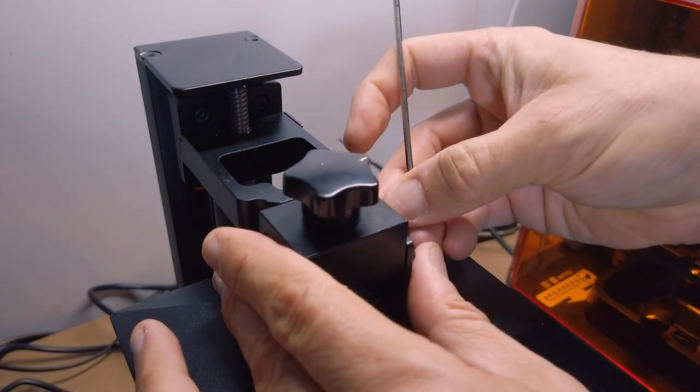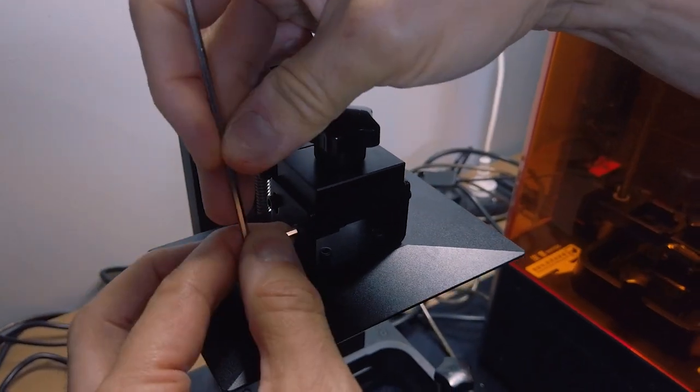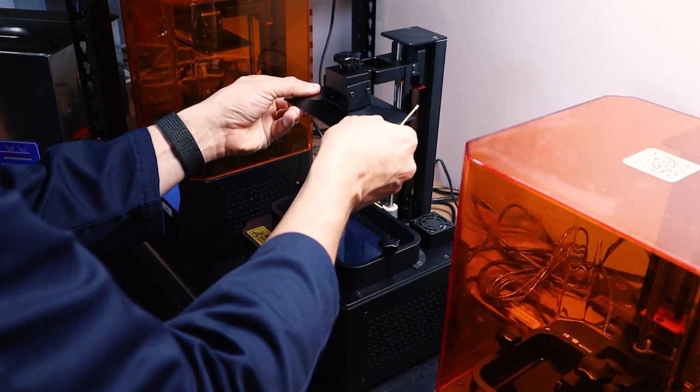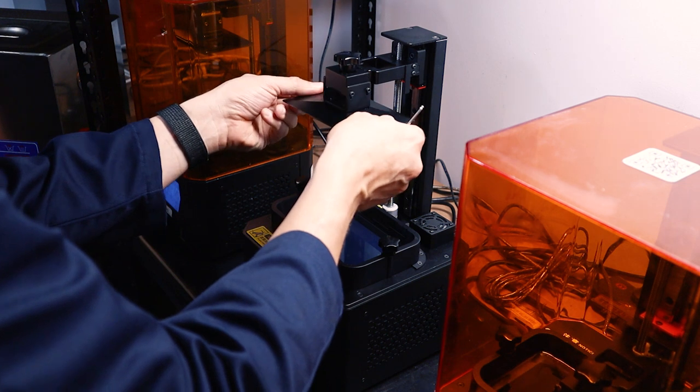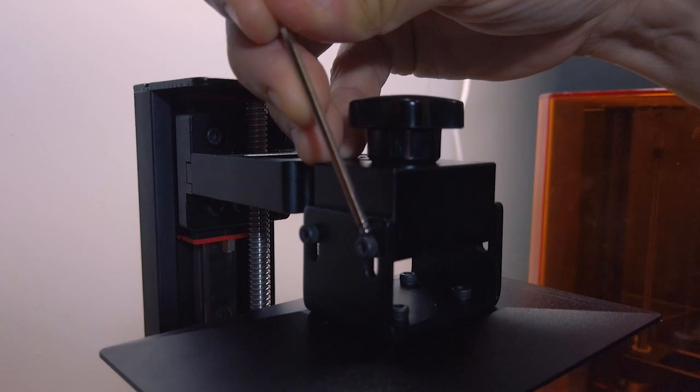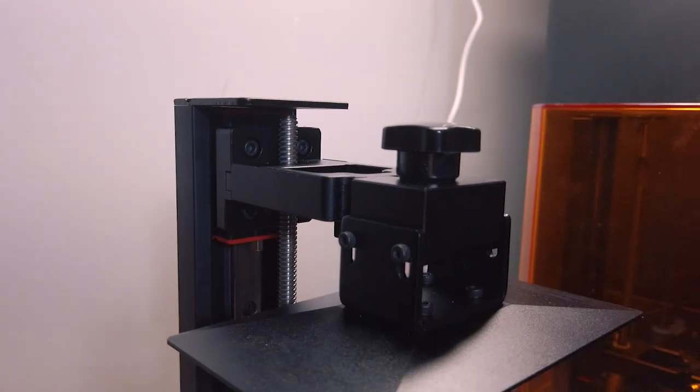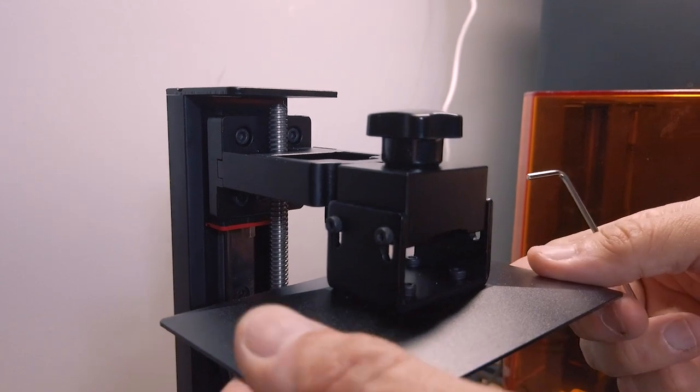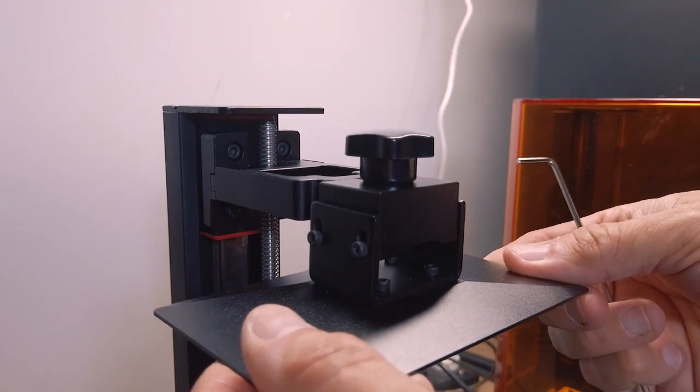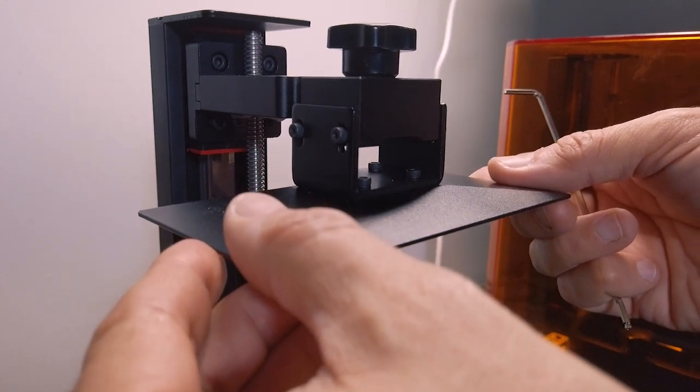So now I'm going to get my allen key and we're going to do the leveling process by loosening those four screws. Now the head can move up and down and pivot but note that the head can't really twist that direction. Another point to make is that the Creality printers do not use washers on the screws. My suggestion as an upgrade is to put washers on each of these screws. It makes tightening them much easier without causing any twist on the plate.